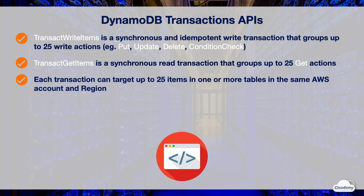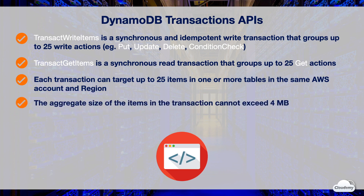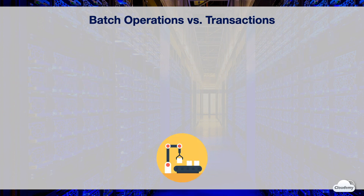Each transaction can target up to 25 items in one or more tables in the same AWS account and AWS region. The aggregate size of the items in the transaction cannot exceed 4 megabytes, which means a transaction can only contain a maximum of 4 megabytes of data. Both batch operations and transactions let you group multiple actions.